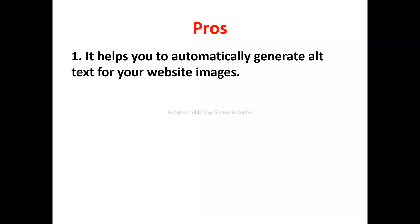Looking at the features of Alt Text AI: number one, it automatically generates alt text for your website images. It generates alt text in seconds using AI technology. It actually analyzes your image and produces an accurate text description. You just upload an image, a CSV file, or paste a link, and Alt Text AI will automatically generate alt text for everything in your media library. It also integrates with your CMS app.